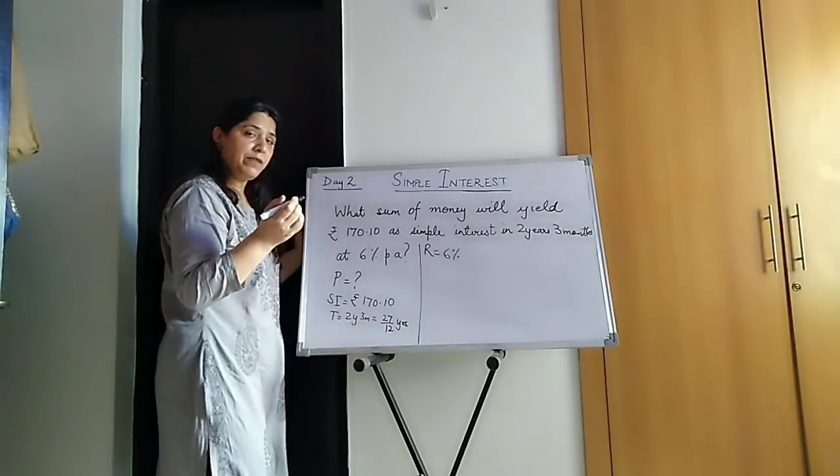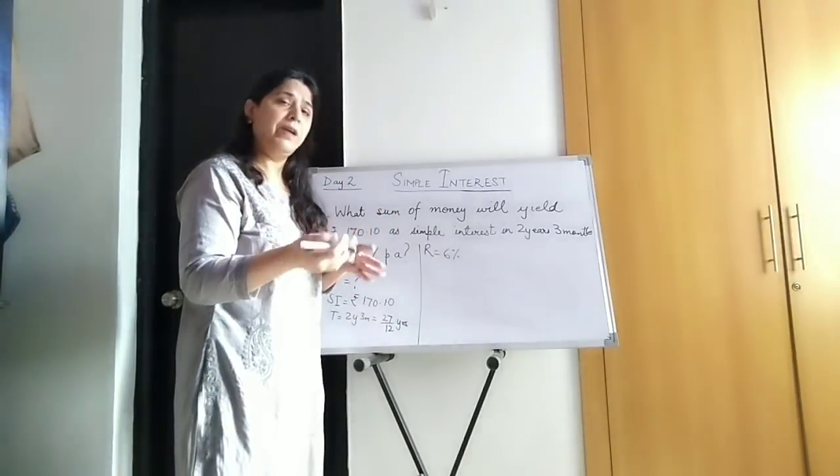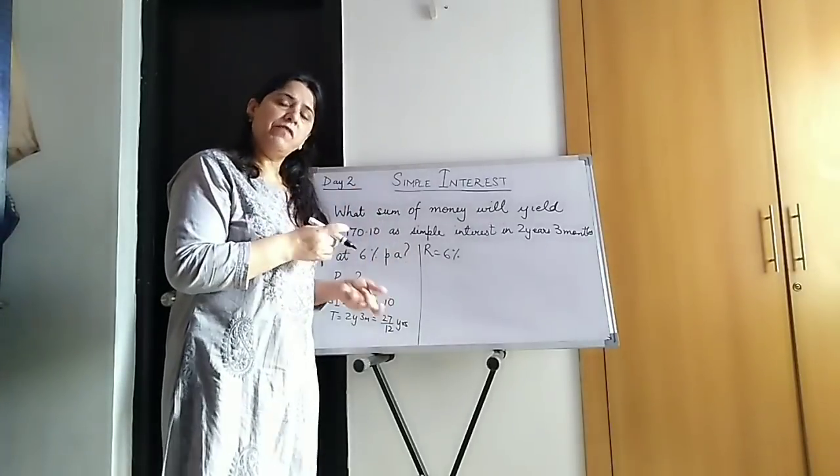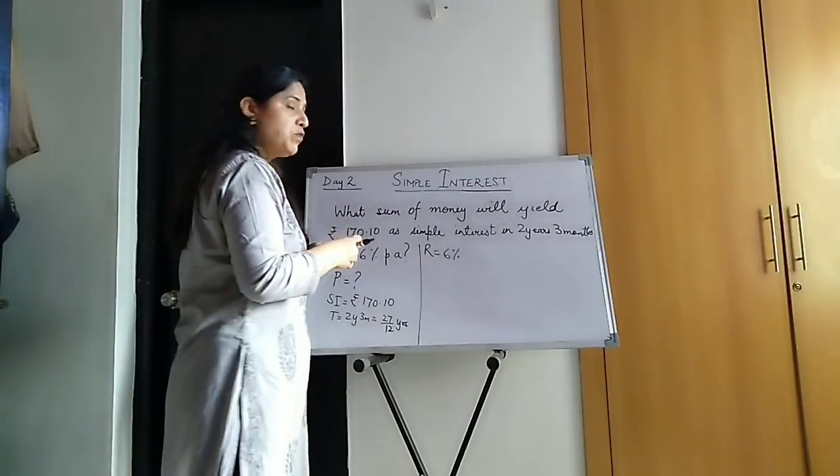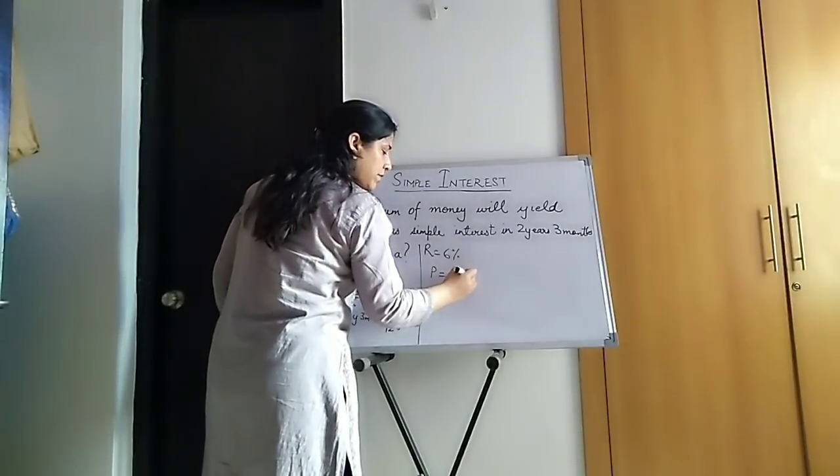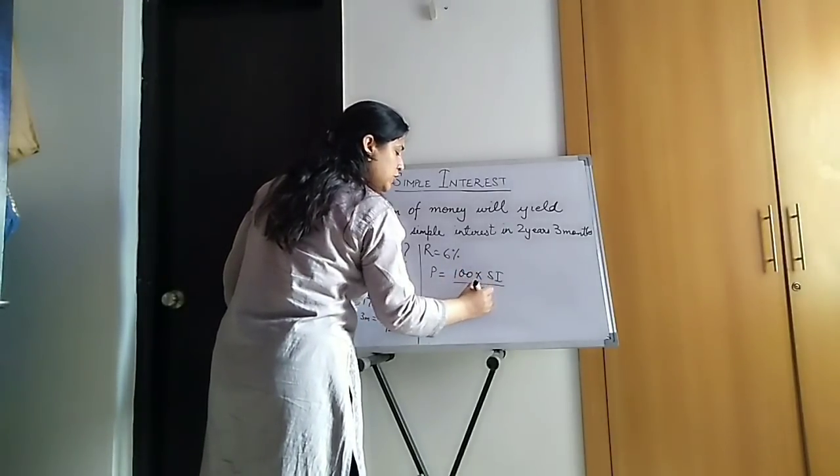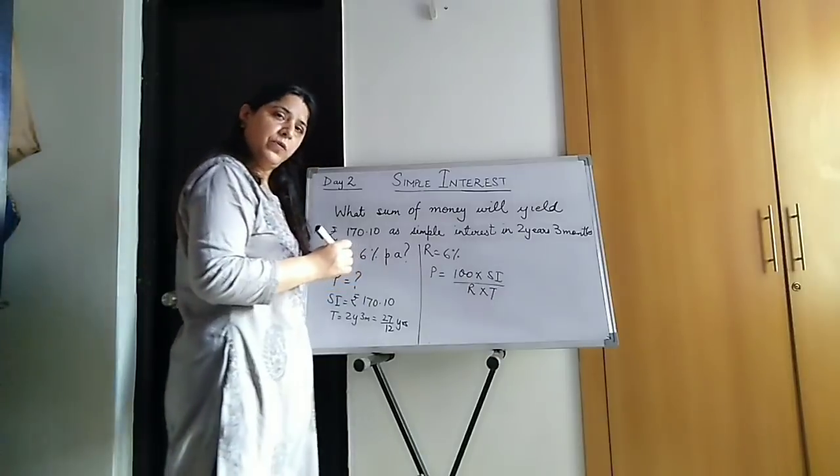Now we have to substitute. Which is the formula that we can use? SI = PRT upon 100. Taking P as X, you can solve. Or straight away, you can apply the formula. Which formula? Principle is 100 into SI upon rate into time.